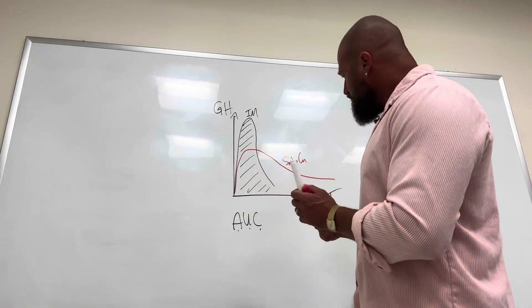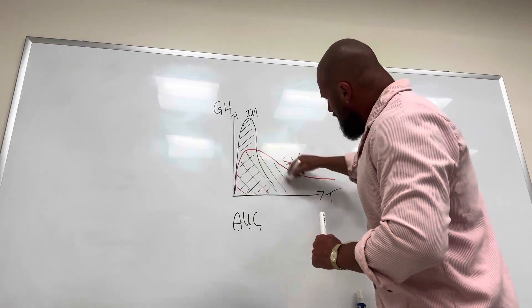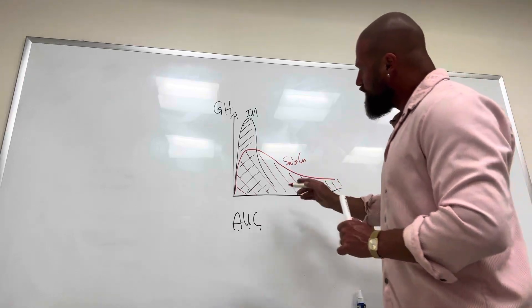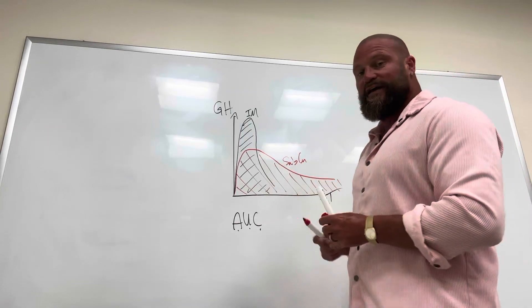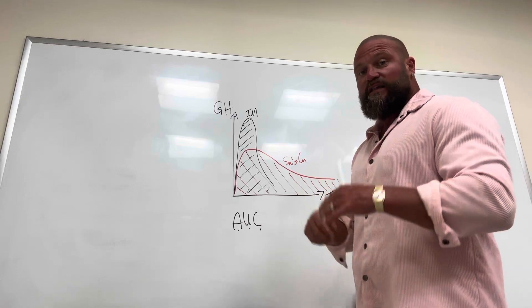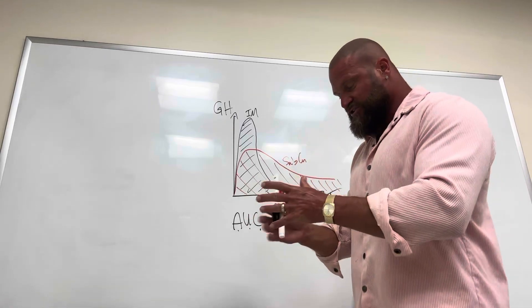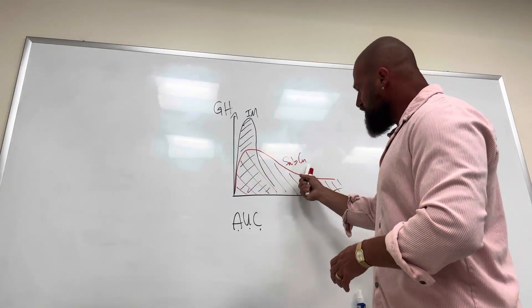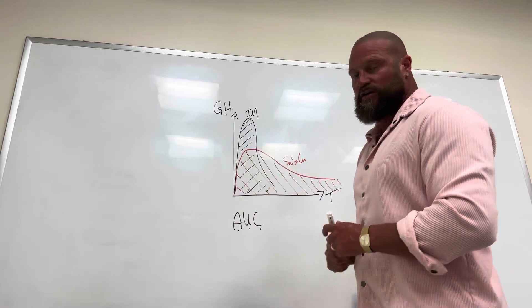So we will do the same for the subcutaneous injection. And as you can see, the area under the curve for the subcutaneous injection is bigger than the intramuscular injection. This means that for the same amount of growth hormone, for the same injection, you will get more in the subcutaneous route of injection as compared to the intramuscular injection.